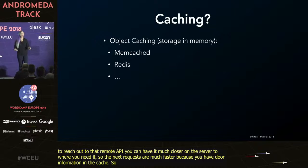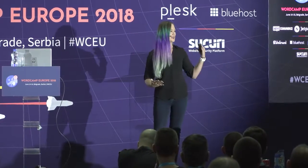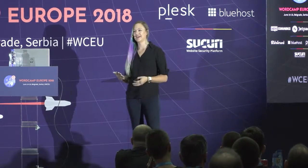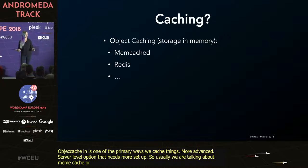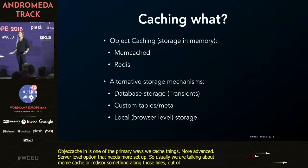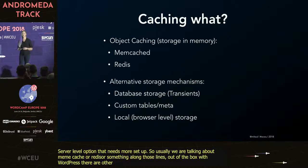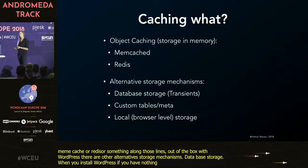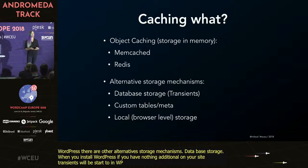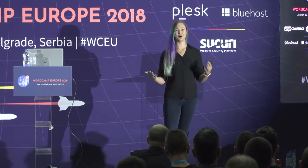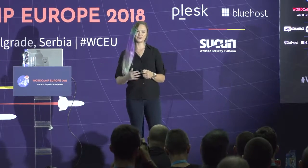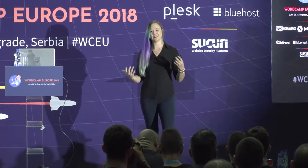What about caching? There are a couple of types. Object caching is one of the primary ways that we cache things — it's a little bit more advanced, a server-level option that needs a bit more setup. Usually when we're talking about object caching, we're talking about memcached or Redis, something along those lines. But out of the box with WordPress there are other storage mechanisms: database storage — when you install WordPress with nothing additional set up, transients will be stored in the WP options table. Some people create additional database tables just meant to store cached items. And finally, we've got local browser-level storage.